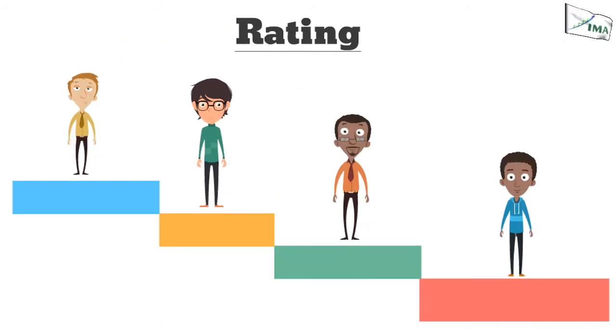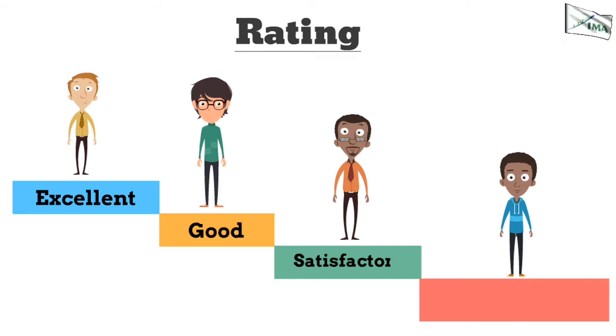Rating: The employees are classified into different categories like A. Excellent, B. Good, C. Satisfactory, D. Below Satisfactory. The number of ratings may be 3 to 5 depending on preference of the company.